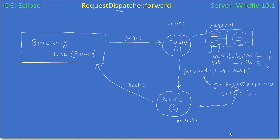Next we discussed the forward — the browsing user sends a request to some servlet, and that servlet can forward the request to some other servlet. In the picture you can see Servlet 1 and Servlet 2. This forward actually transfers the ownership from Owner 1 to Owner 2. We also discussed that when transferring ownership, it can modify the request object by setting an attribute, and Servlet 2 after the ownership transfer can get that attribute and perform request processing. Since ownership is transferred to Owner 2, Owner 2 is responsible for sending the response.